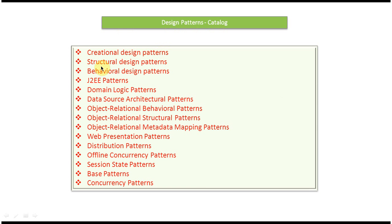The first category is creational design patterns, the next is structural design patterns, and the third is behavioral design patterns. After that we have J2EE patterns, domain logic patterns, data source architectural patterns, object-relational behavioral patterns, object-relational structural patterns, object-relational metadata mapping patterns, presentation patterns, distribution patterns, offline concurrency patterns, session state patterns, base patterns, and concurrency patterns.